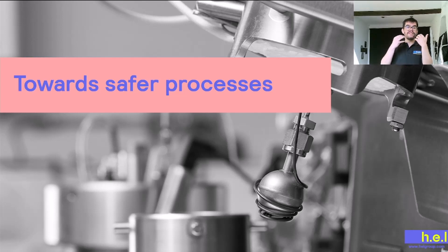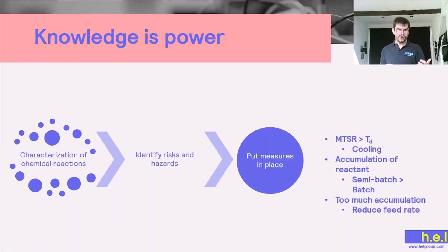So with this kind of information, then we can work towards fabricating and elaborating safer processes. So in this case, knowledge really is power. So we have characterized our chemical reaction and we have identified the risks and hazards, and now what we can do is putting measures in place to avoid those hazards. So for example, if we know that the onset temperature for the secondary reaction is lower than the MTSR, then we want to consider to cool down our system so we never reach that temperature and have a thermal runaway.